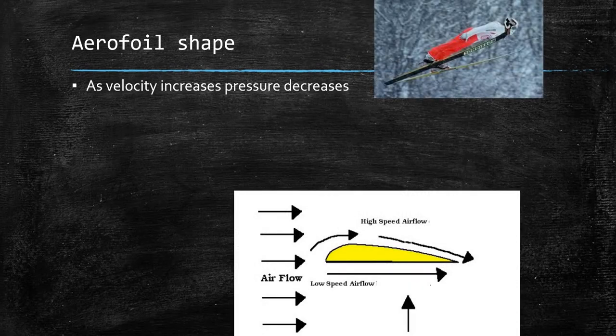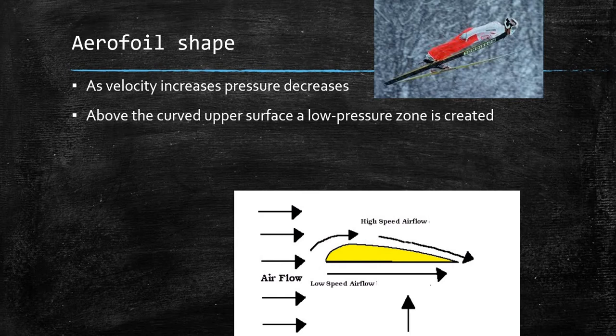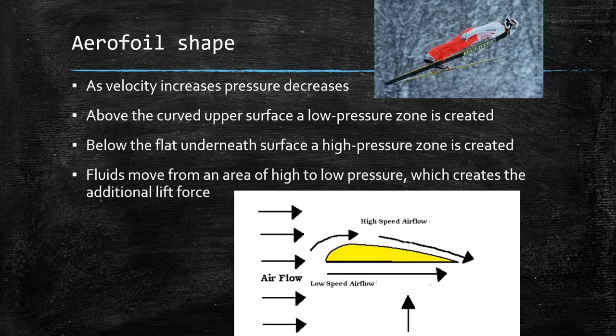As the velocity increases, the pressure decreases. So above the curved upper surface there is a low pressure zone, and below the surface there is a relatively high pressure zone because that air is moving slower. Fluids move from an area of high to low pressure, which creates the additional lift force. Because the upper area has high speed airflow and low pressure, and the lower area has high pressure, the object moves from high pressure upwards to low pressure, creating a lift force. The ski jumper has created that same aerofoil shape with his body, and that's how he creates lift in the air.